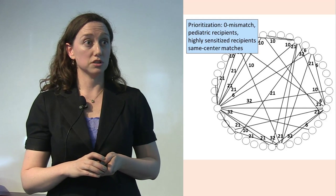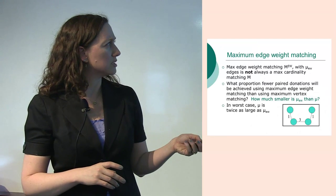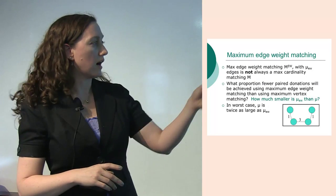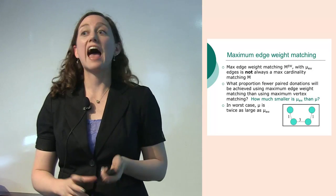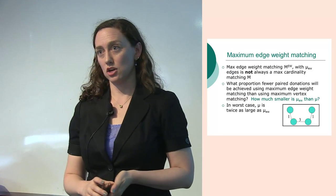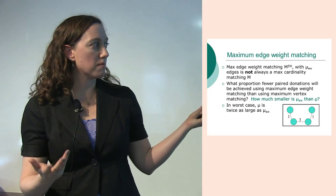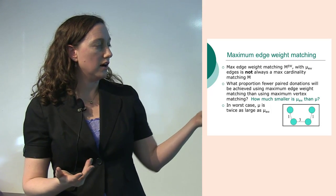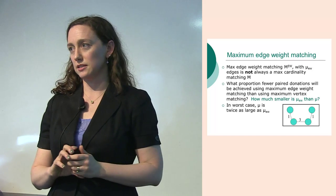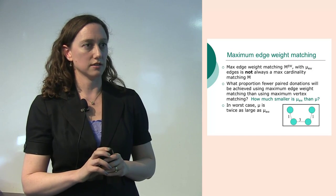The problem is that when we assign weights to edges, we do get a conflict with the maximum number of matches. In the worst case, if I assign points badly, I may get half as many transplants as I could have. If I do a maximum edge weight matching, I might choose the edge with three points and get only two people transplanted instead of four who could have gotten transplanted.